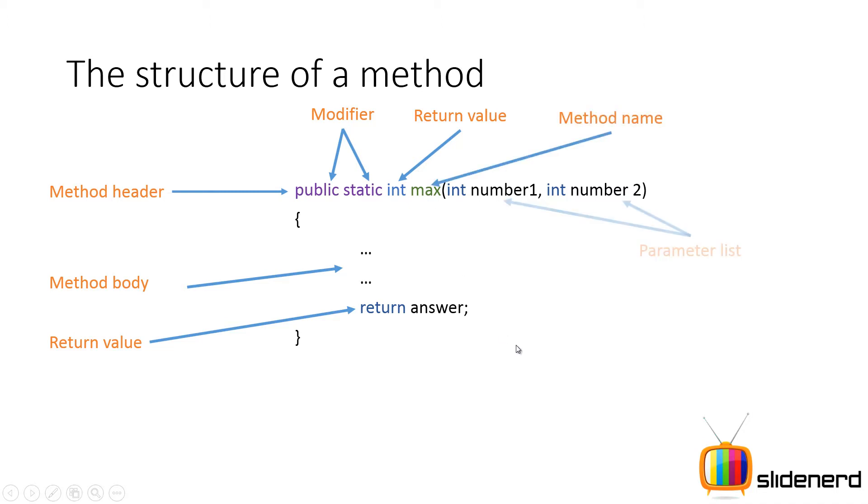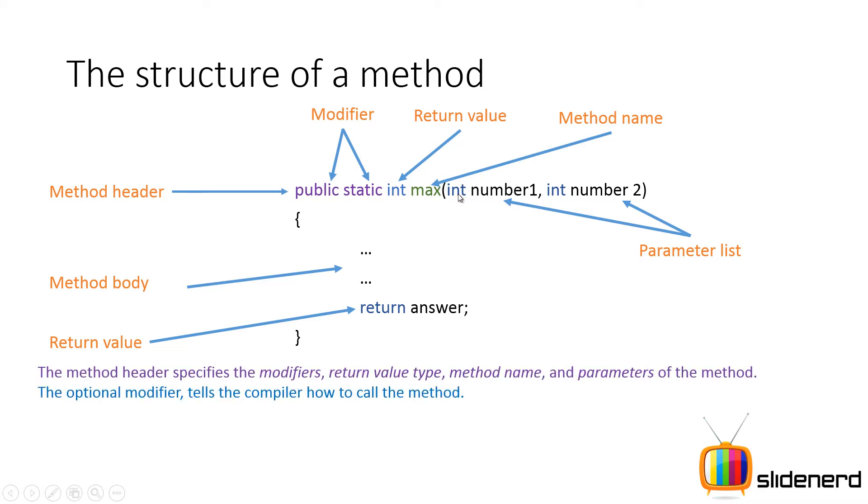Then of course you have your method name and you have your parameter list. As you guys remember, for every parameter that you specify over here, you have to specify the data type of the parameter. Now just to give you guys a rough insight, the method header has the modifiers, return type, method name, parameters. This modifier is optional and it tells the compiler how to call the method.